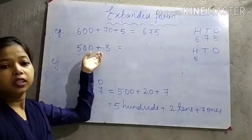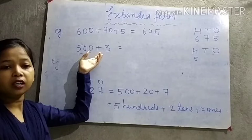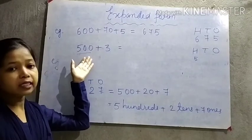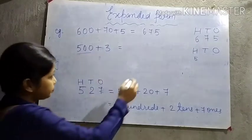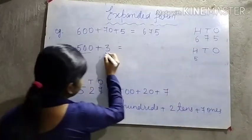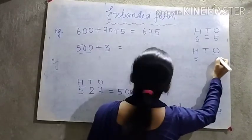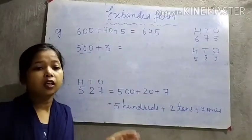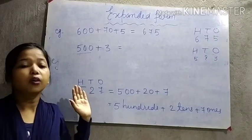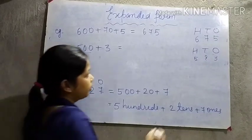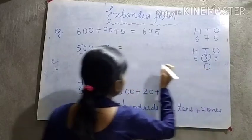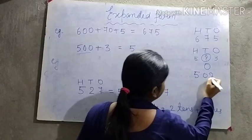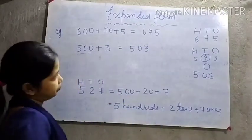Children, look here — is there any tens in 500 plus 3? No. So we move on. 3 is in the ones place, so we write here only 3. Now, what about the tens place? Nothing is given there, so we put 0. So our short form is 503.